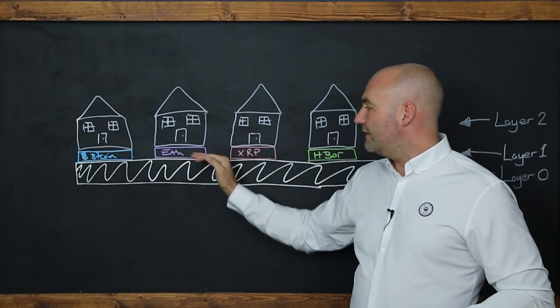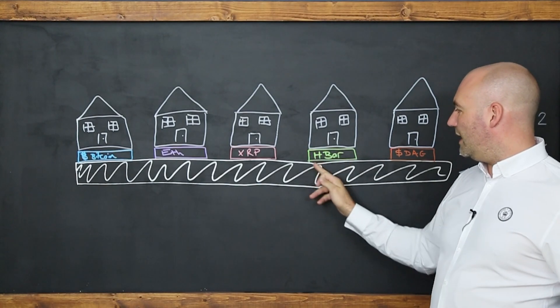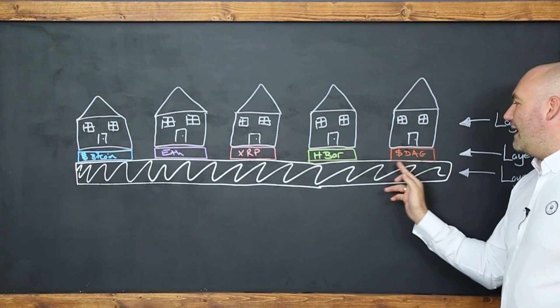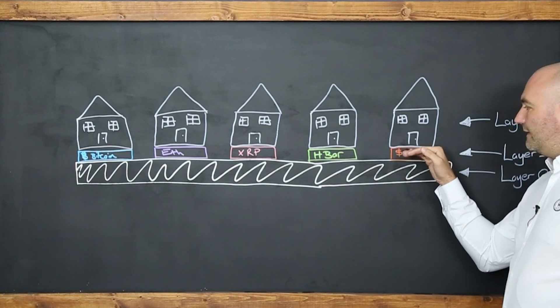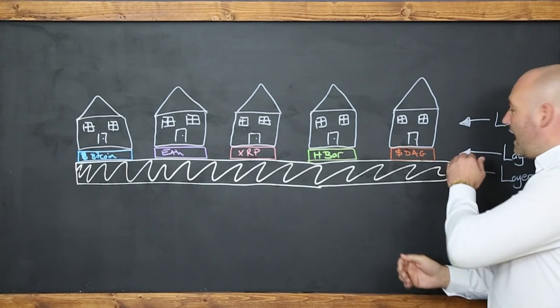Ethereum, there's their foundation, layer one. XRP, Ripple, layer one. HBAR, their hashgraphs, HBAR is layer one. And there's DAG, Constellations DAG in this instance. So there's Constellations DAG, and they're a foundation, they're layer one.